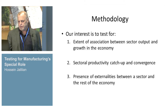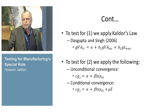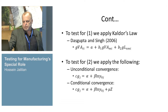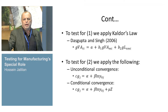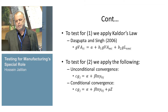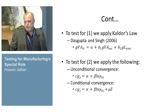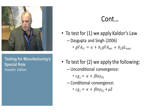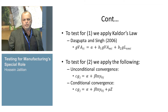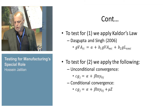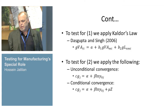For each of these, we adapt different methods of analysis. To test the extent of association between sector output and growth, we look at Kaldor's law and the version more recently adapted by Dasgupta and Singh, in which the growth of value added in an industry is positively related to value added growth in the manufacturing sector and negatively to value added growth of labor in the non-manufacturing sector. In the paper they use labor growth in agriculture as a substitute for the non-manufacturing sector because they are looking at developing countries.